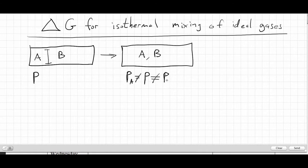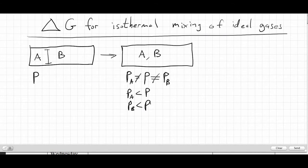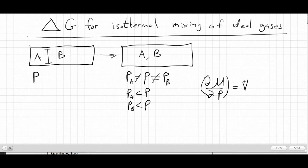We can say that PA and PB, while they're not equal to each other, are both going to be less than P — so the pressures of gases A and B have gone down. We know that the change in chemical potential with pressure equals the molar volume, so if the pressure went down, the chemical potentials went down. Since the chemical potentials for both gases decreased, we expect the delta G of mixing to be negative — in other words, we expect the gases to mix.